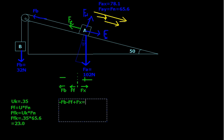This one's going forwards along the ramp in our xy coordinate system. So these two are negative forces, this one's a positive force. So negative, negative, positive. And that is going to be equal to that sigma — the sum of all the forces — which is going to be the final force being exerted on that block.